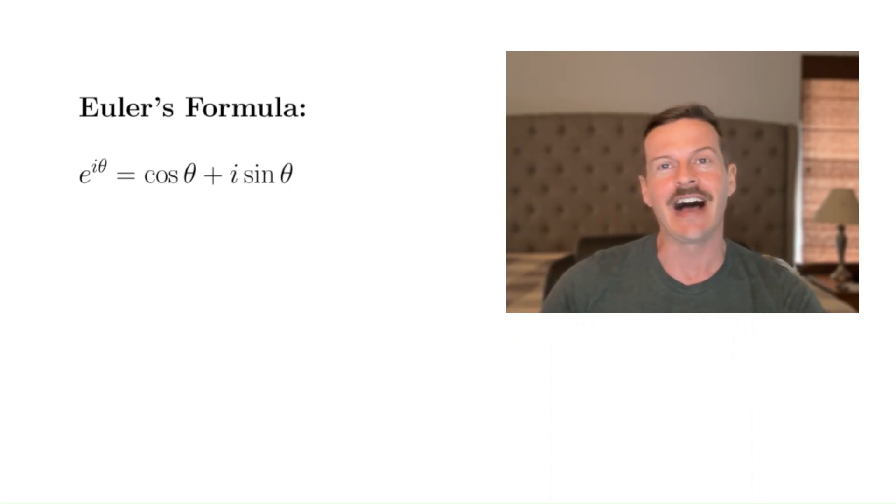And you get e to the i pi equals cosine pi plus i sine pi. Of course, sine of pi is zero, and cosine of pi is negative one. So you get e to the i pi equals negative one. Or in other words, e to the i pi plus one equals zero. And sometimes that's ranked as the most beautiful formula in all of math.